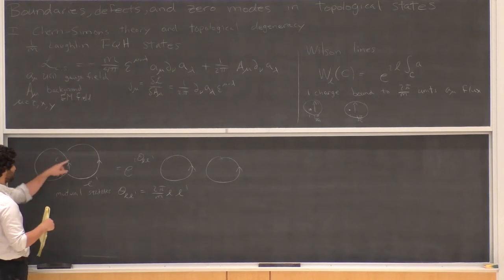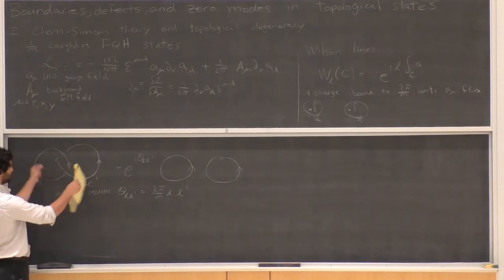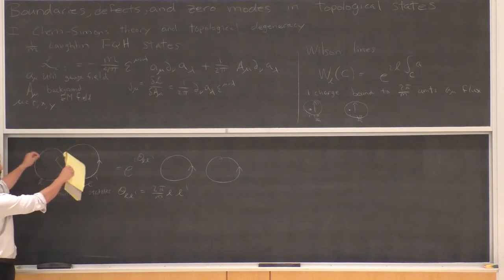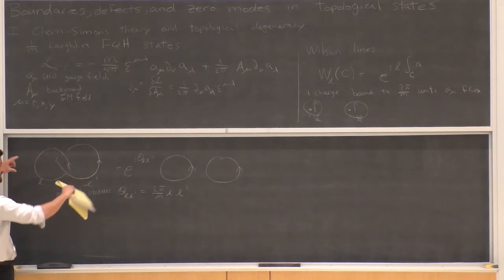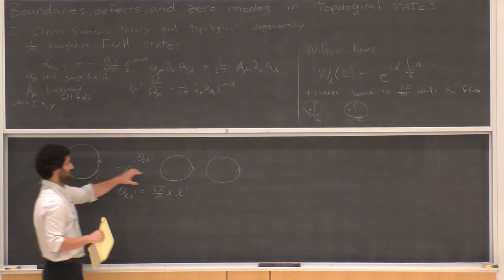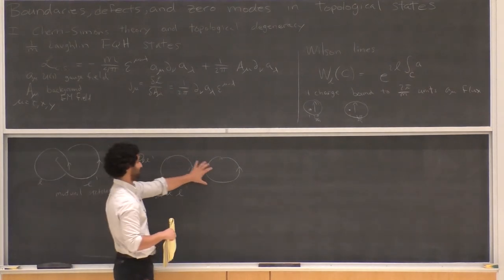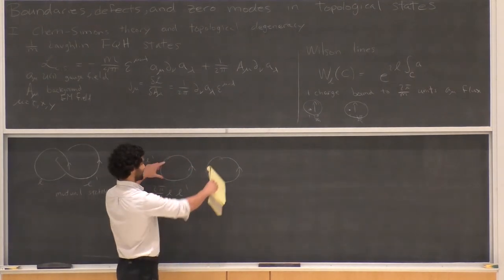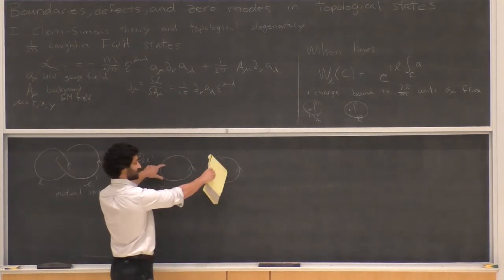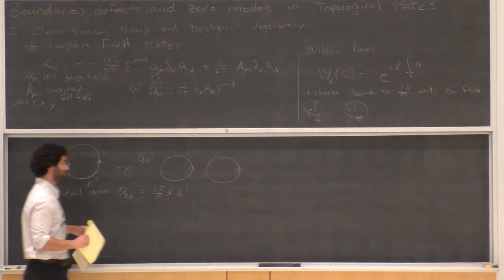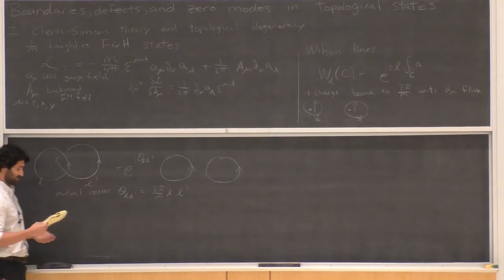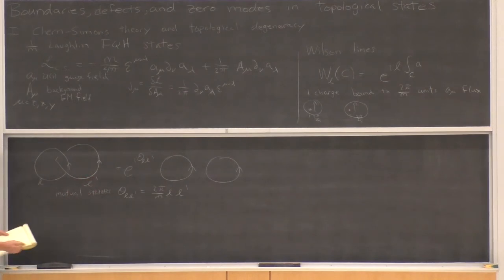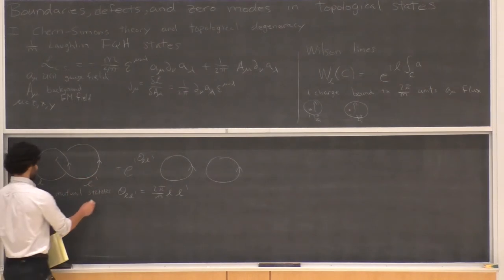You can take these Wilson lines associated with two curves C and C' and compute the expectation value — something like ⟨W(C) W(C')⟩. This expectation value expresses the braiding phase. You compute this as a path integral in this action. There's also the self-statistics: if you consider the same quasiparticle exchanging once, you compare that process to not exchanging.